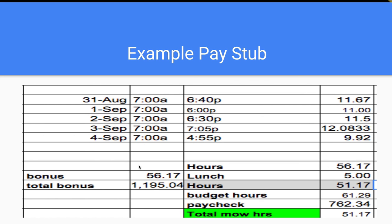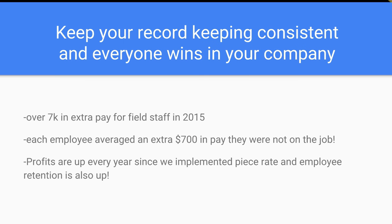We also track the mowing hours on the mow crews and the maintenance hours on the maintenance crews. Keep your records very consistent — everybody wins in your company. Quick summary of what we did in 2015: we paid out just over $7,000 in extra pay for our field staff that they weren't actually performing direct work for. Each employee averaged around $700 in pay that they were not on the job. This has vastly helped us retain our employees year after year, and ever since we implemented the piece rate pay system, our employee retention and profits have been up consistently every year.